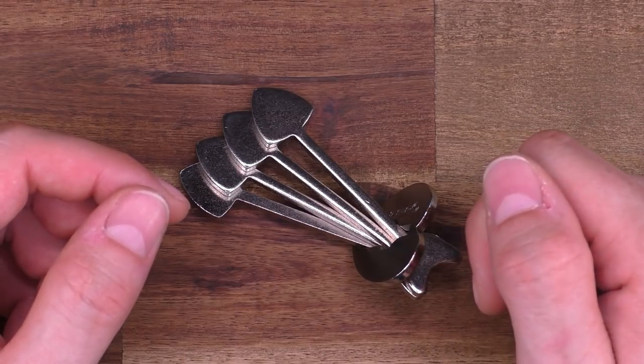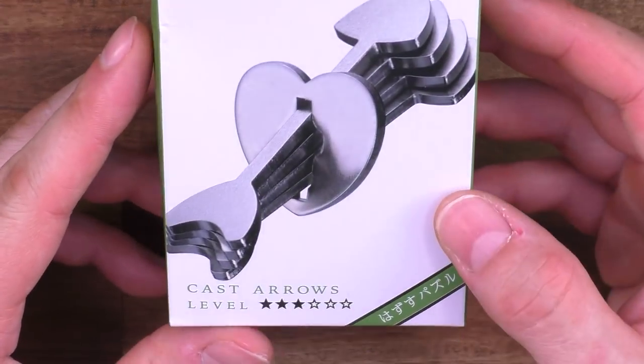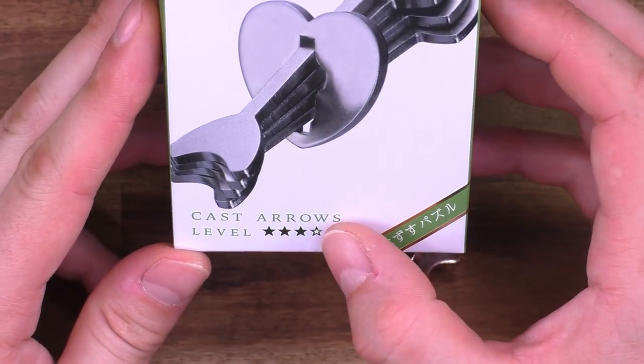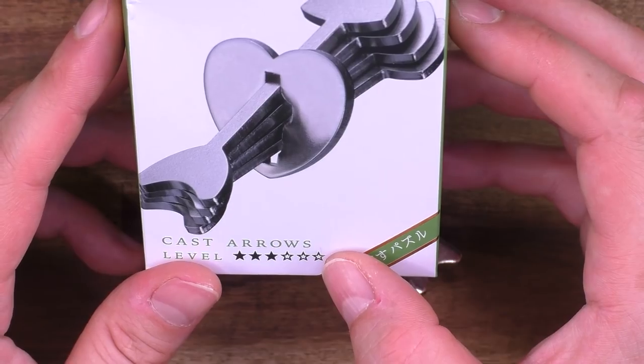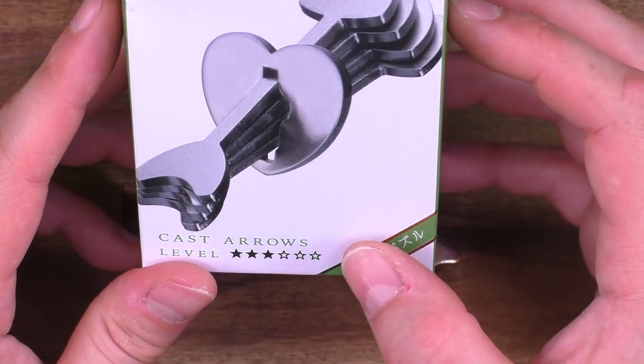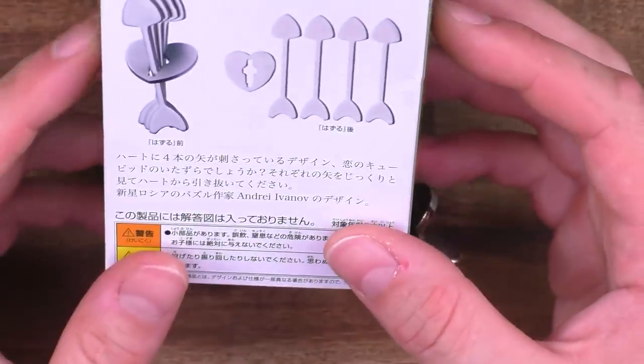The first puzzle we review after the summer break is the Cast Arrows, made by Hanayama. Comes in this box here, this is a Japanese version of the box, and it has a difficulty rating of 3 out of a maximum of 6, which is a little bit too easy, or underrated from my point of view. I would give it minimum a 4 out of 6.